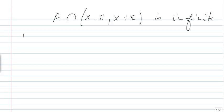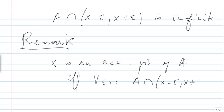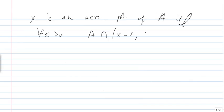Let us make a remark: x is an accumulation point of A if and only if, for every ε, A intersects (x − ε, x + ε) is infinite. Obviously if the intersection is infinite for every ε, then x is an accumulation point. The definition of x being an accumulation point of A is: for every ε, A intersects (x − ε, x + ε) contains a point different from x.